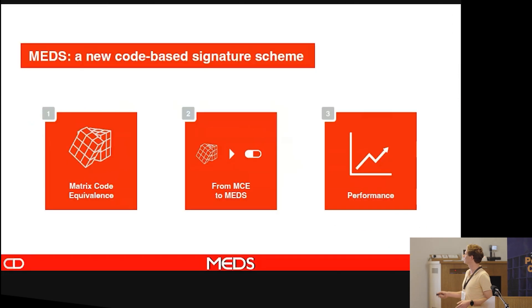Basically what we're going to look at is a signature that comes from Matrix Code Equivalents. As such, I will first talk about Matrix Code Equivalents and then subsequently talk about how to make a signature from it, although a lot has been said by Eduardo already, and then we will see the performance noise.